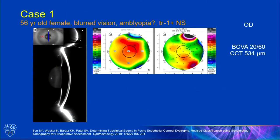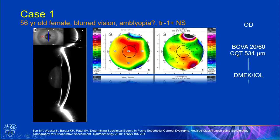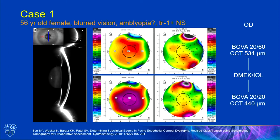Case number one: a 56-year-old with blurred vision, told she has amblyopia, minimal cataract, very abnormal corneal thickness maps with posterior depression, corneal guttae, and best corrected vision of 20/60. It's a thin cornea. I did a DMEK surgery with cataract surgery, and now she sees 20/20. Her cornea is thinner than average, but she sees well.